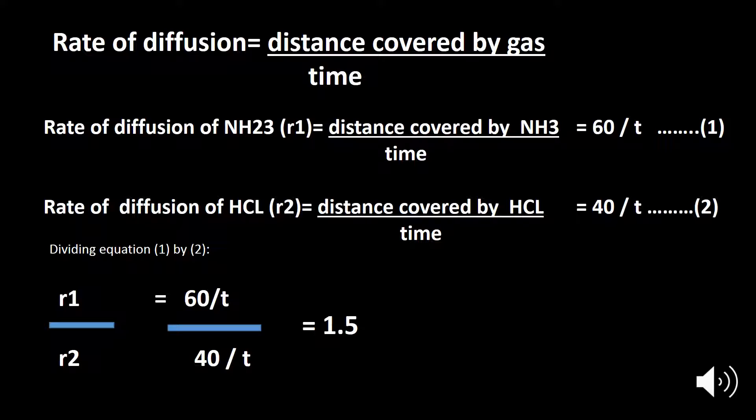This means ammonia covered 60 cm while HCl covered 40 cm in the same time. Since the rate of diffusion equals distance covered in unit time, R₁ (ammonia) = 60/t and R₂ (HCl) = 40/t. Dividing these two equations: R₁/R₂ = 60/t ÷ 40/t = 1.5.